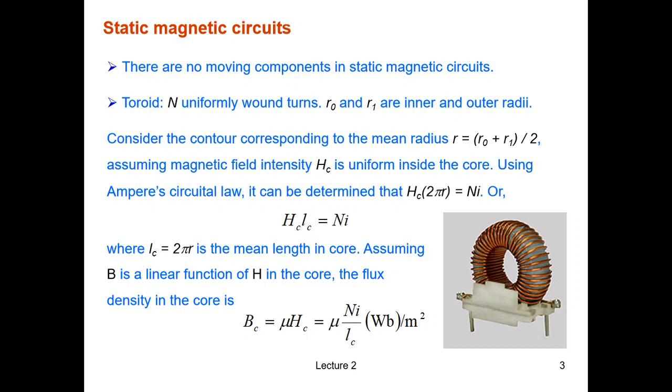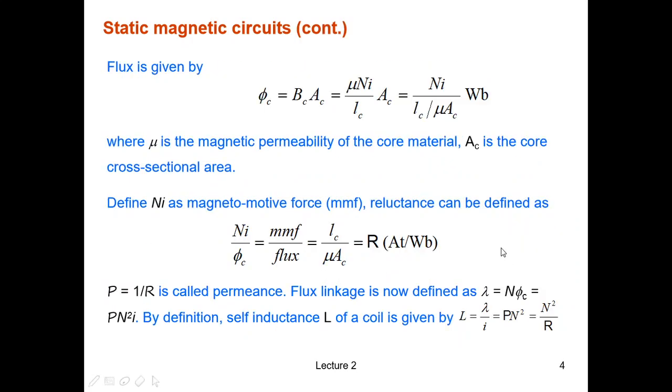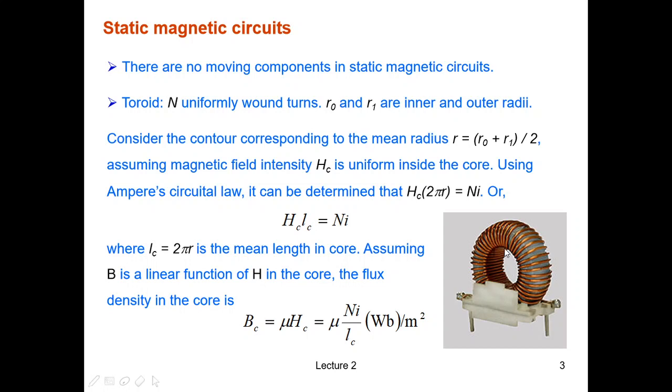First, we're going to look at static magnetic circuits. When we say static, we mean there are no moving components in those circuits. So let's have a look at a toroid as this picture illustrates. This toroid has some wire wound on it. Assuming we have R9 and R1 as the inner and outer radii, R9 is from the middle here to this point, and R1 is from the middle here to the outer radius.